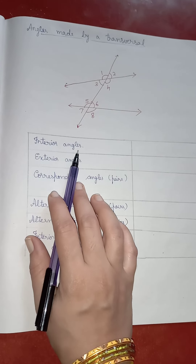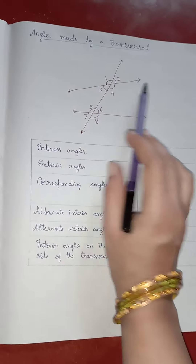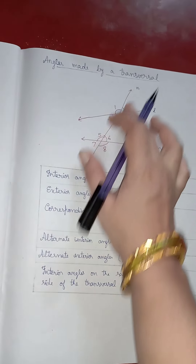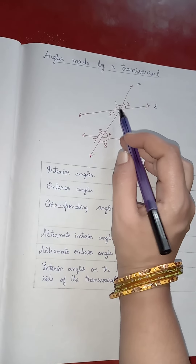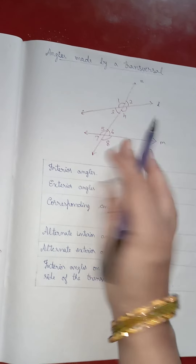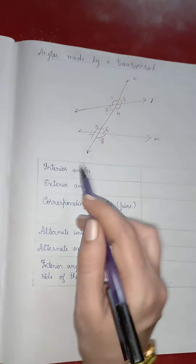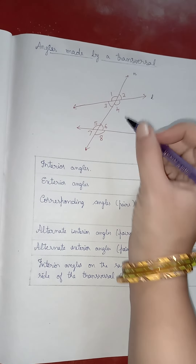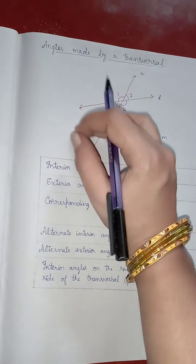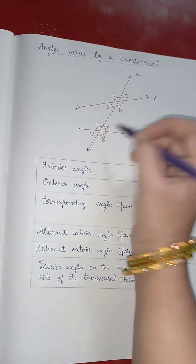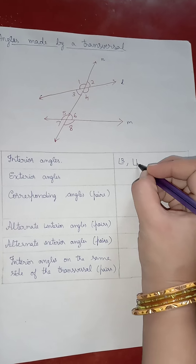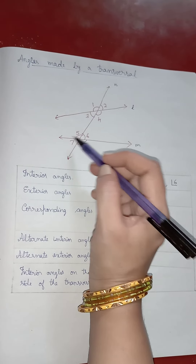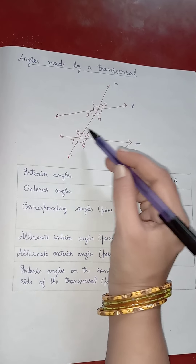Now let us see which are the interior angles formed. Here you have two lines — let us mark them L, M, and N. When the transversal cuts the given two lines, you will have 8 angles: 1, 2, 3, 4, 5, 6, 7, 8. Angles 3, 4, 5, and 6 are closed — two lines are covering them — so these four are interior angles. Angles 3, 4, 5, and 6 are interior angles.